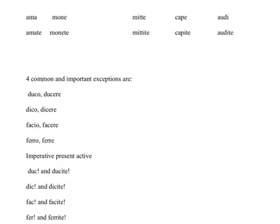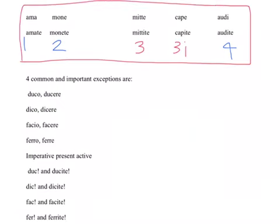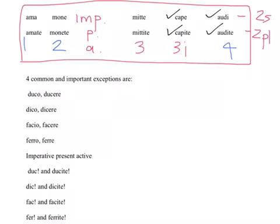One more time, nicely typed out: first conjugation, second conjugation, fourth conjugation, third and third-I — here are your normal imperative present actives. The imperative present active only appears in the second person singular and the second person plural, but in each case you translate them as a command. For example, 'listen' and 'listen,' or 'seize' and 'seize' — you're commanding you, or you plural, to do something.